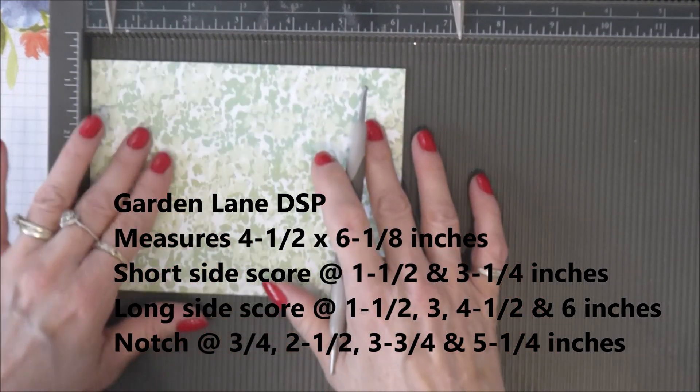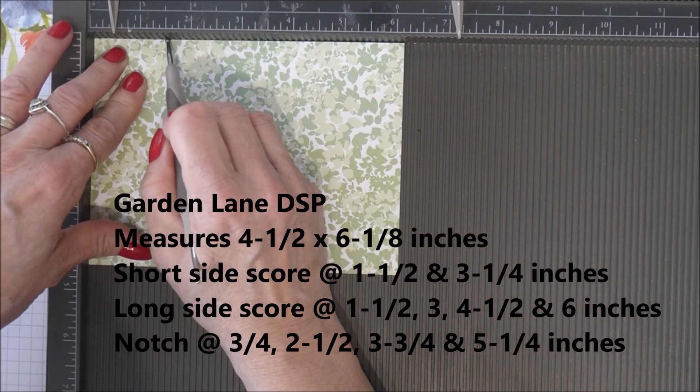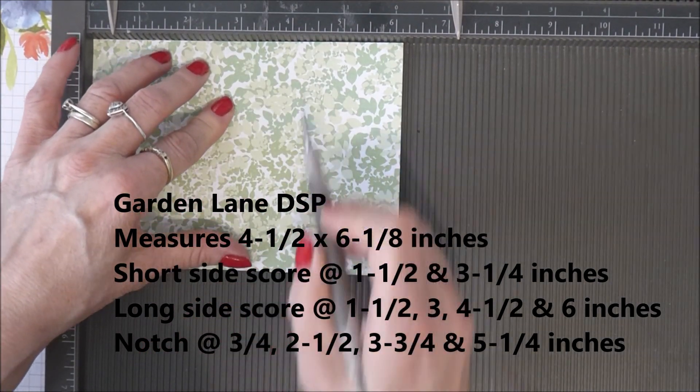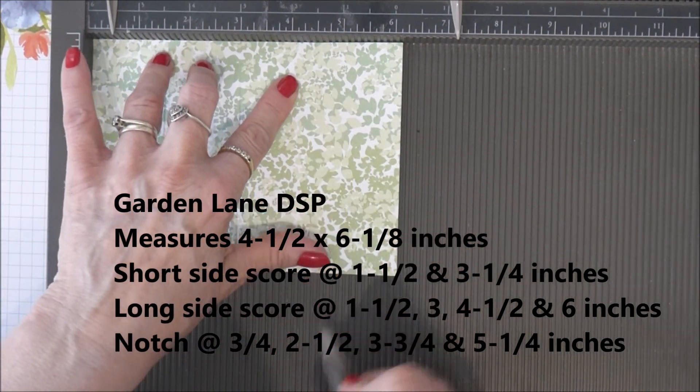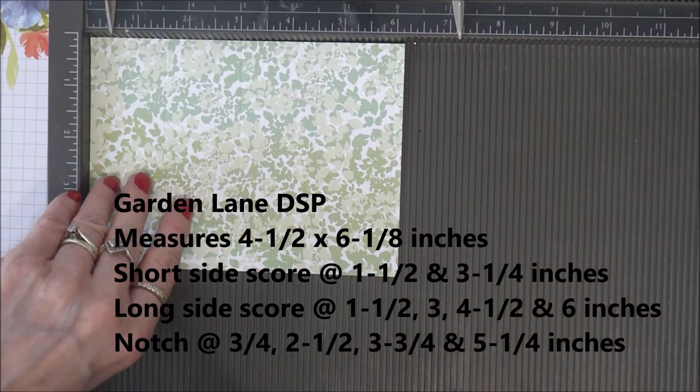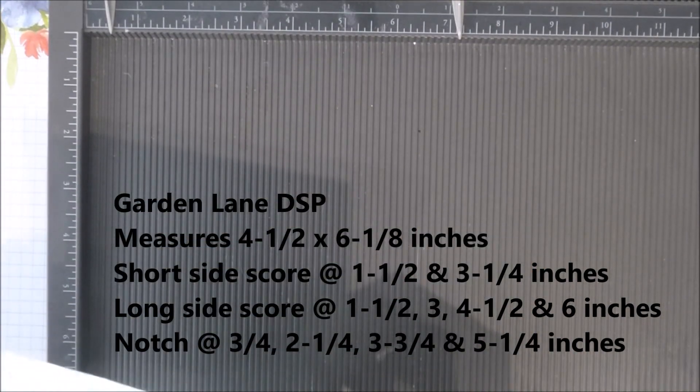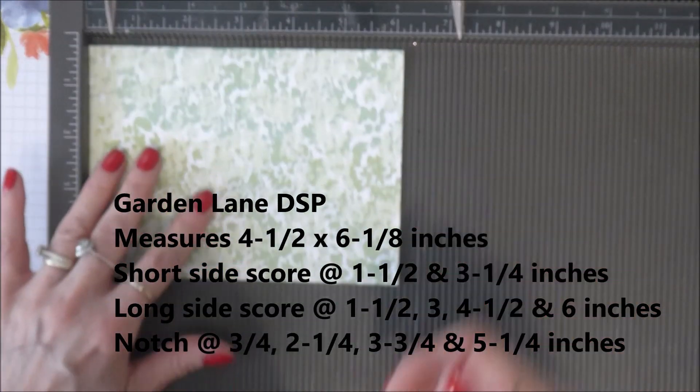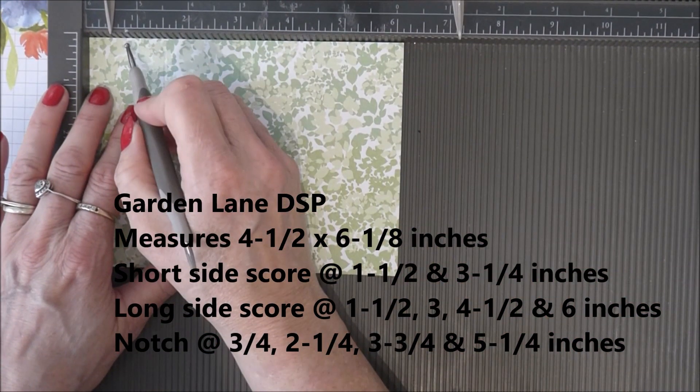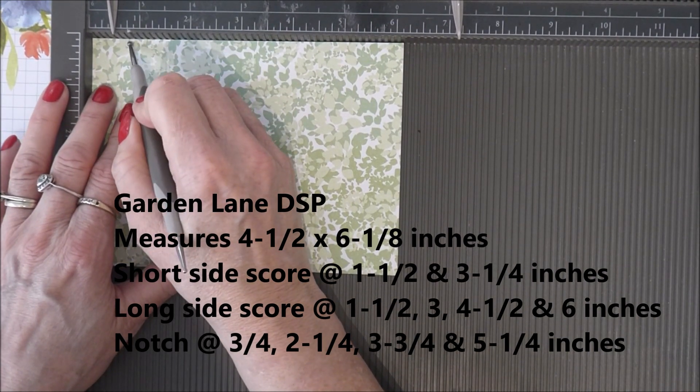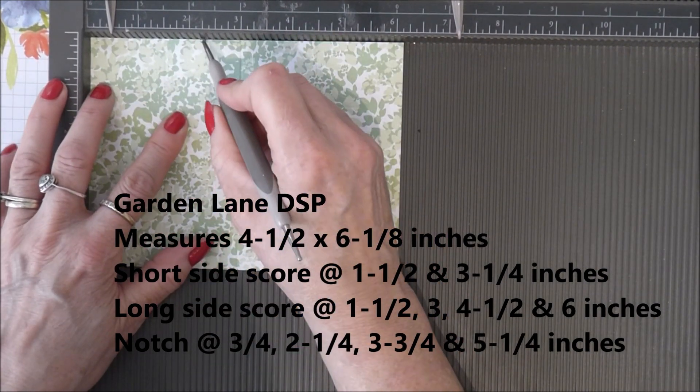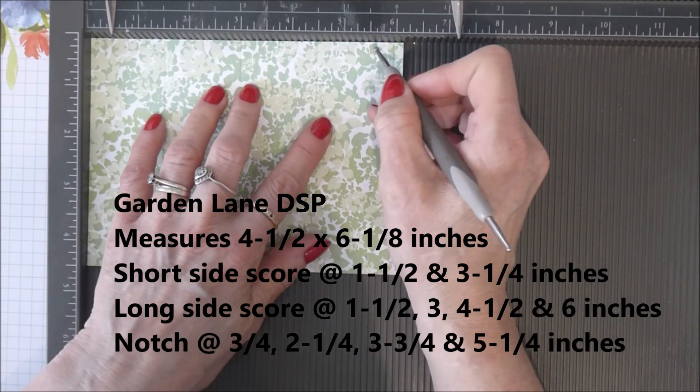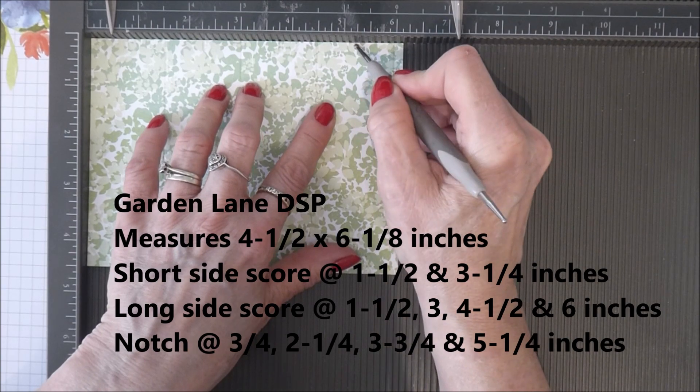Turning it around you're just going to score it one and a half, three, at four and a half, and at six inches. So what we now want to do is some notching. You're going to notch at three quarters, at two and a quarter, at three and three quarters, and at five and a quarter.